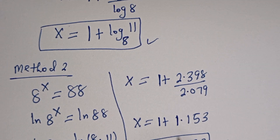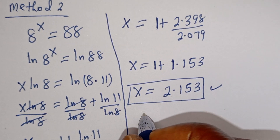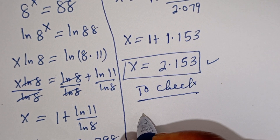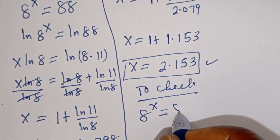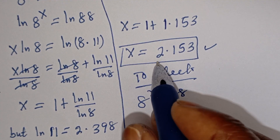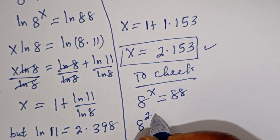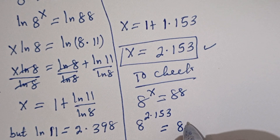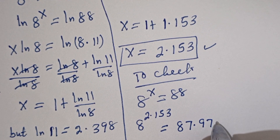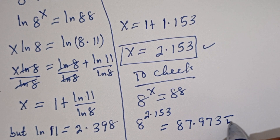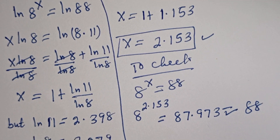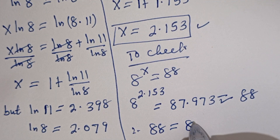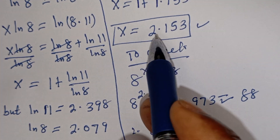Let's check to confirm if our answer is right. We have the given equation: 8 to the power of s is equal to 88. When s is 2.153, we have 8 to the power of 2.153, which is equal to 87.973, and this is approximately equal to 88. Therefore, the left-hand side 88 is equal to the right-hand side 88, which is true at s equal to 2.153.